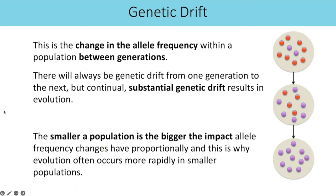Genetic drift is the change in allele frequency within a population from one generation to the next. There will always be some genetic drift because we do not produce cloned offspring, but it is continual and substantial genetic drift that counts as evolution. The smaller the population, the bigger the proportional impact of allele frequency changes, which is why evolution occurs more rapidly in smaller populations.